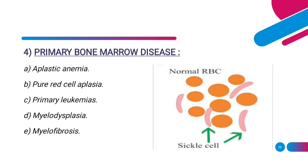Myelodysplasia is considered a pre-leukemic syndrome characterized by ineffective hematopoiesis — that is, ineffective RBC synthesis — resulting in non-regenerative anemia, commonly seen in dogs, cats, and people. Myelofibrosis causes bone marrow failure secondary to replacement of normal marrow elements with fibrous tissue, and is seen in dogs, cats, goats, and people.